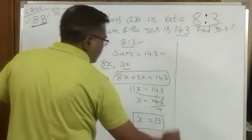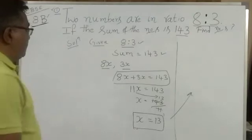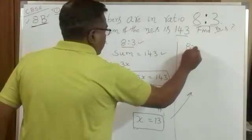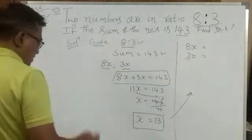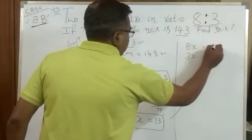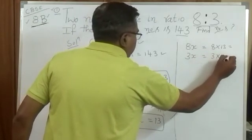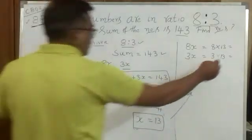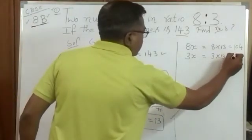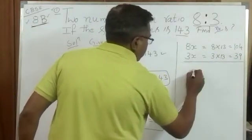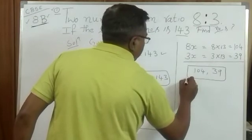We have not found out yet what are those two numbers. The first number is 8x and the second number is 3x. Just put wherever x is there, you put 13. That is 8 into 13, that is the answer. 3 into 13, that is another answer. I have calculated: this will be 104 and another one is 39. These are the two numbers. 104 and 39 are the required numbers.